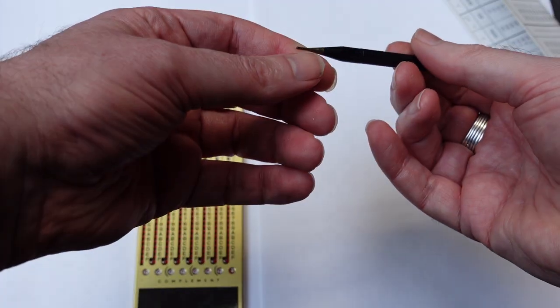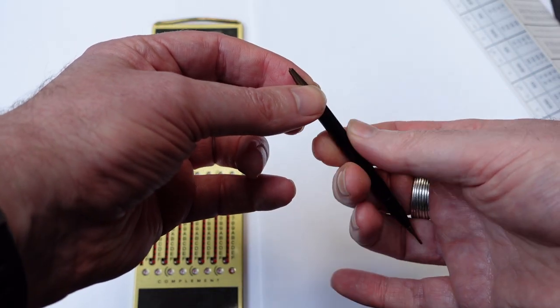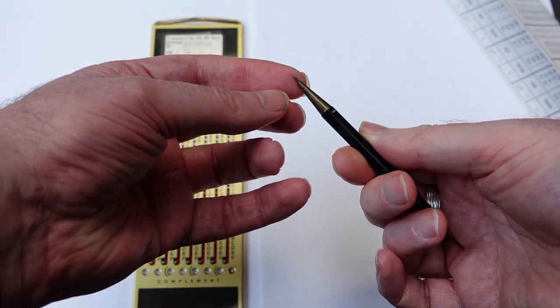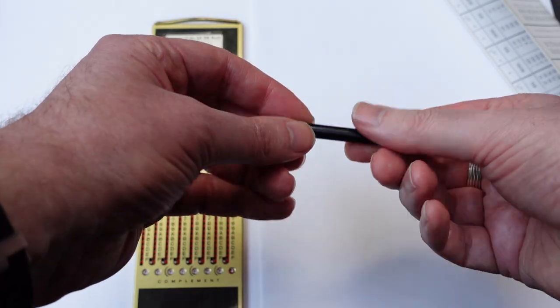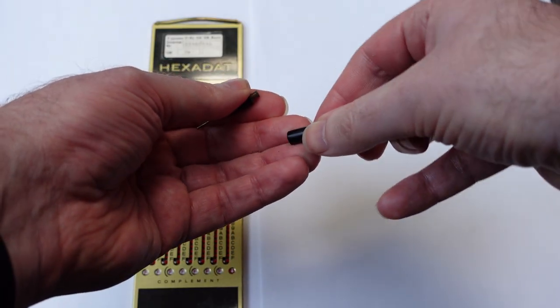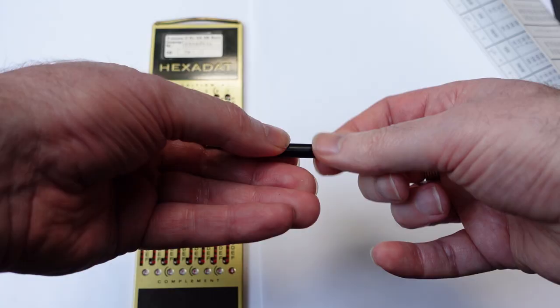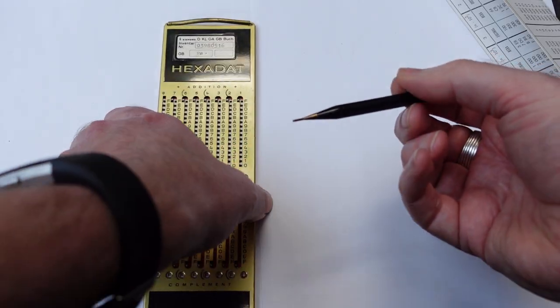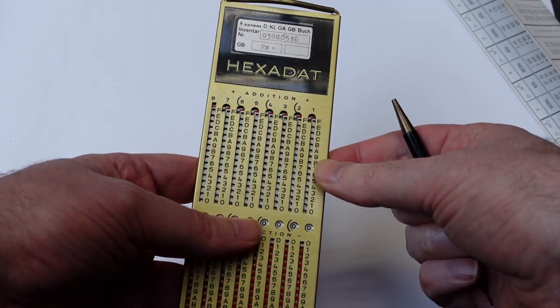The stylus has a stylus at one end and a mechanical pencil at the other. And it does have some pencil lead inside. But anyway, here's the calculator itself.